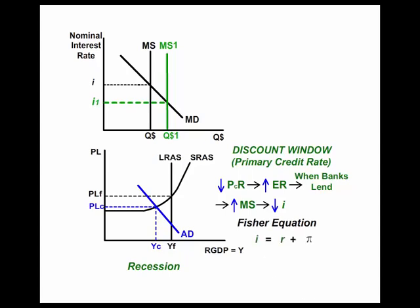if the nominal rate goes down and people expect the economy to get better, then the expected inflation rate will go up. If the expected inflation rate goes up as nominal rates are going down, then real rates will go down.